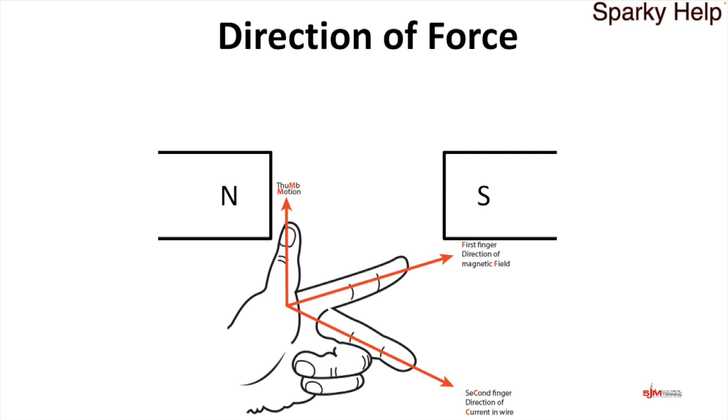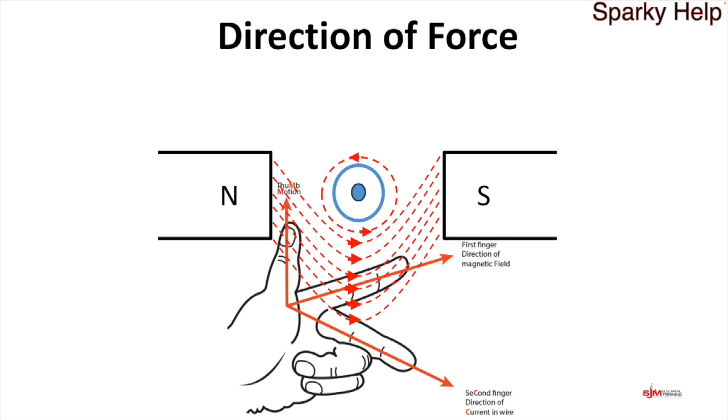If we put those in, current is coming towards us and the magnetic field is going north to south, left to right. Therefore, the thumb, the motion, would be going up. You can use your fingers, but if you understand the basic principles just by looking how the interaction between the fluxes would work, you can figure it out logically anyway. This is a handy method for finding direction and there's the force being exerted.